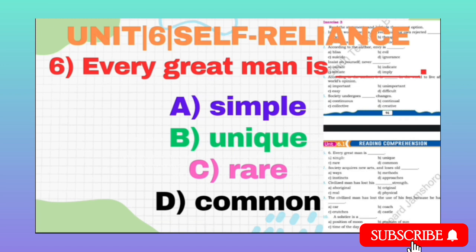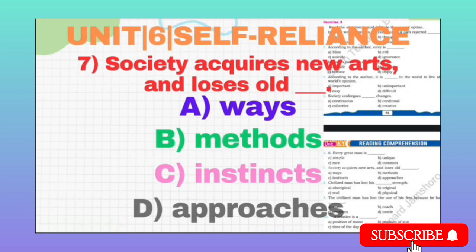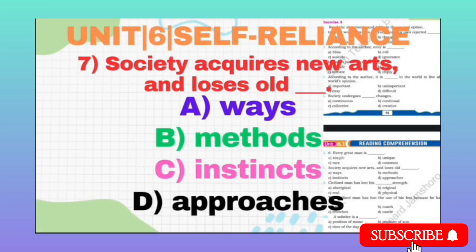MCQ number 7 is: Society acquires new arts and loses old ___. It means society acquires new arts and loses old what? Option A: Ways. Option B: Methods. Option C: Instincts. Option D: Approaches. The correct option is C, Instincts.